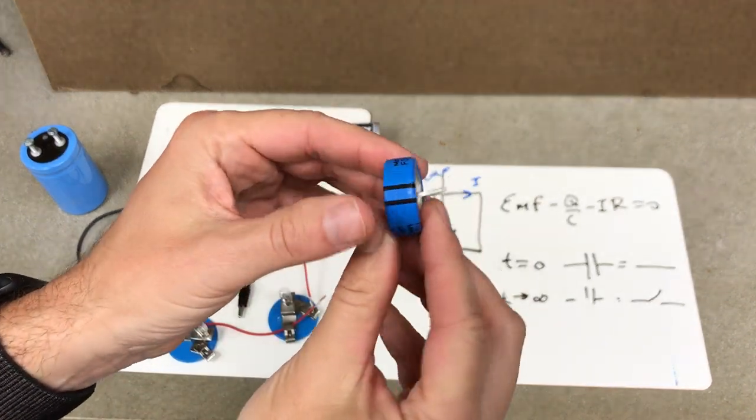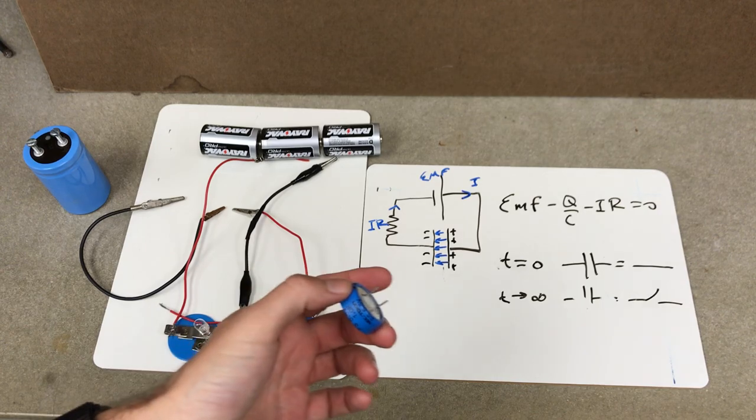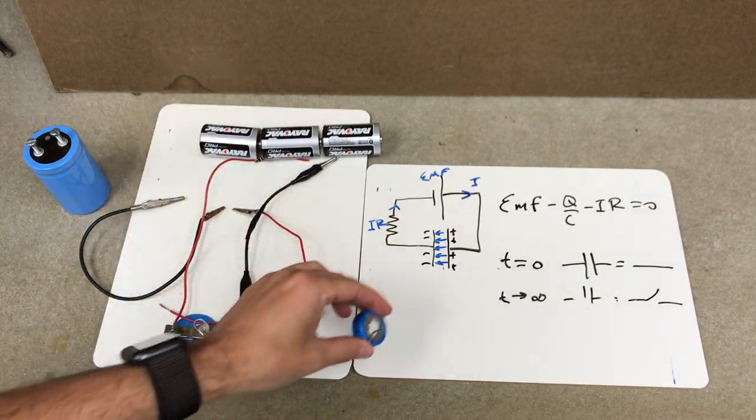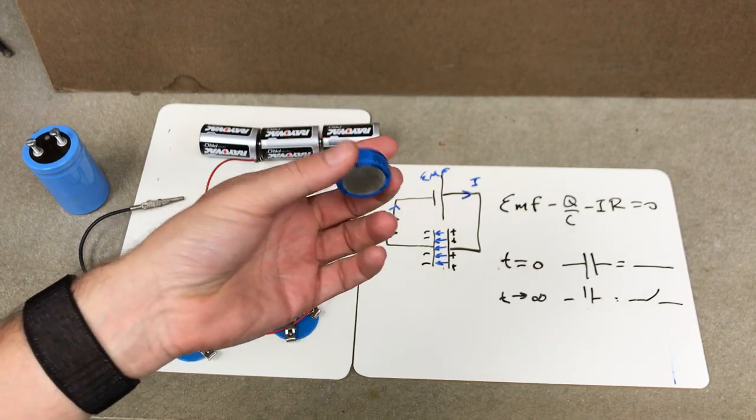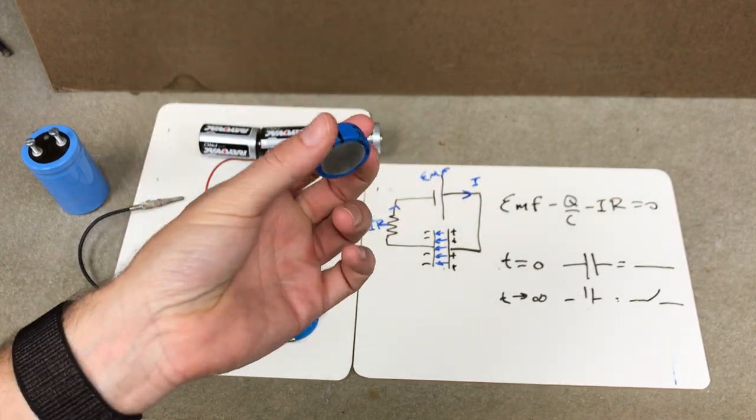Okay, let's do some demos with a capacitor and some light bulbs. It's gonna be fun. First of all, you could think of this capacitor as two parallel plates, even though this one is not, but it does the same thing.